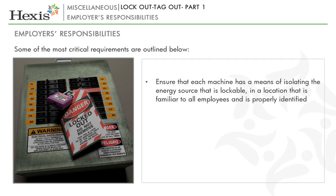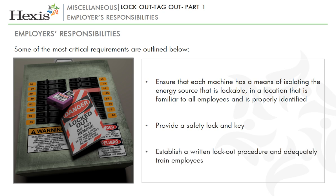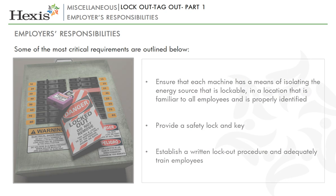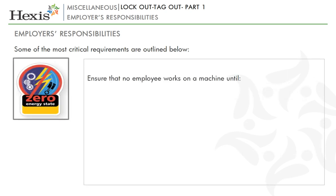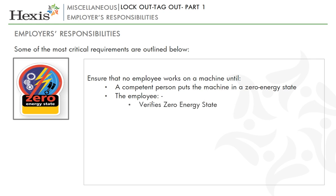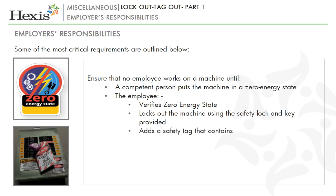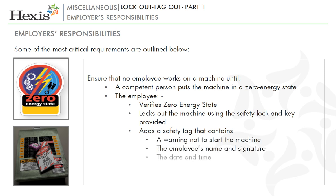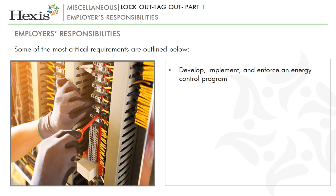Ensure that each machine has a means of isolating the energy source that is lockable in a location familiar to all employees and is properly identified. Provide a safety lock and key. Establish a written lockout procedure and adequately train employees. Ensure that no employee works on a machine until a competent person puts the machine in a zero energy state and the employee verifies zero energy state, locks out the machine using the safety lock and key provided, adds a safety tag containing a warning not to start the machine, the employee's name and signature, the date and time, and tests that the machine is inoperative. Develop, implement and enforce an energy control program.